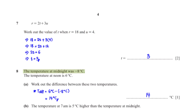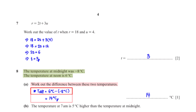The temperature at midnight was negative 8 degrees Celsius. The temperature at noon is 6 degrees Celsius. Work out the difference between these two temperatures. The temperature difference is simply the final temperature, which is 6 degrees Celsius, minus the initial temperature, which is negative 8 degrees Celsius. When we type this into the calculator, we get 14 degrees Celsius.